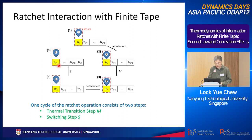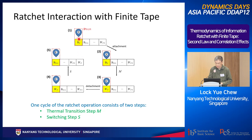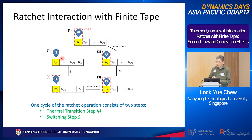This cycle repeats continuously. We call one interaction between the ratchet and one bead a bead scan. Because it is a finite tape with recycling, going through all the beads is called a tape scan.